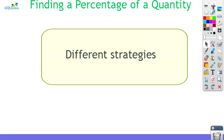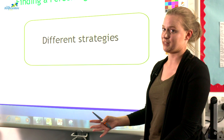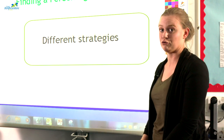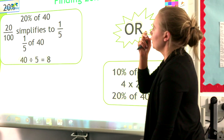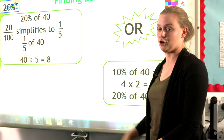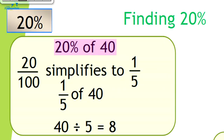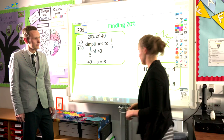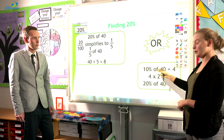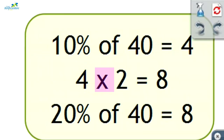Children will use the strategies David described to calculate finding a percentage of a quantity. There are different ways children can calculate these and we're going to show you a few different examples. When finding twenty percent, there are a few ways to do that. In this example we're calculating twenty percent of forty. They will know twenty percent is the same as twenty out of a hundred, which simplifies to a fifth. They find a fifth of forty by dividing forty by five, which gives eight. Alternatively, they can find ten percent of forty, which equals four, then multiply by two to give eight. So twenty percent of forty equals eight.